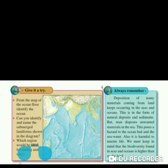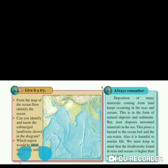Always remember: depositions of many materials coming from land keep occurring in the sea and the ocean, in the form of natural deposits and sediments. But many deposit unwanted materials in the sea, which poses a hazard to the ocean bed and the seawater. Also, it is harmful to marine life. We must keep in mind that the biodiversity found in the oceans and sea is higher than on the land.